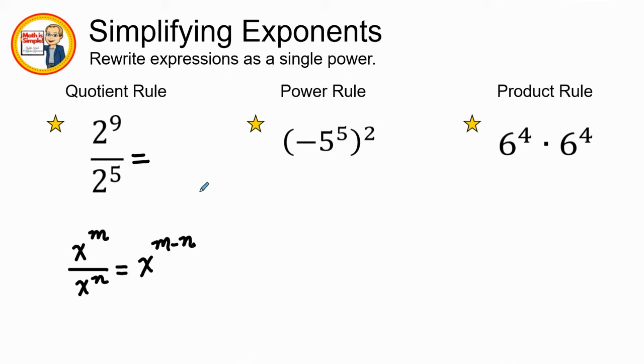So we would subtract the value of m minus the value of n. In this equation we see that our base is two, so we're going to keep our two. Then we're going to take the value of the exponent in the numerator, which is nine, and we are going to subtract it with the exponent in the denominator, which is five.